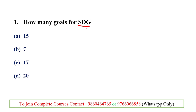The first question: how many goals are there for SDG? The SDG — Sustainable Development Goals — has 17 goals. These SDG goals are a collection of global goals set by the United Nations General Assembly in 2015, targeted for the year 2030, and are part of the UN resolution known as Agenda 2030.